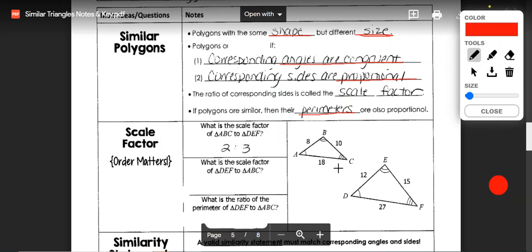We can find that scale factor by taking any side such as AB and then comparing it to its corresponding side of DE, then just simplifying that fraction.